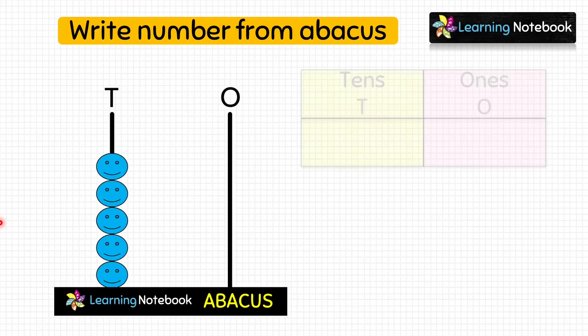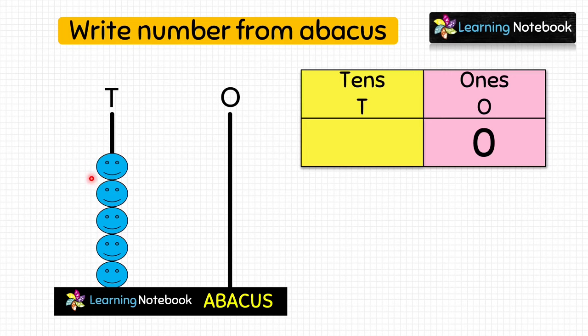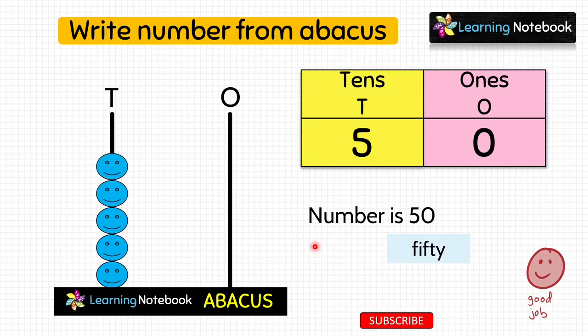Now let's do our last example. First we will count the beads at the ones place — but there is no bead at the ones place, so the digit at the ones place is 0. Then count the beads at the tens place: 1, 2, 3, 4, 5. So write 5 at the tens place. This abacus is showing the number 50.